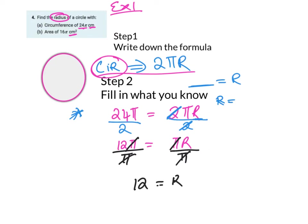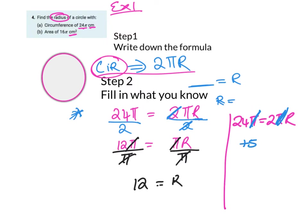A useful shortcut: if you have 24π = 2πr, since both sides are multiplied by π, you can cancel the π straight away. It's similar to cancelling identical terms on both sides. So you can spot that trick to speed things up. That gives us the radius as 12.